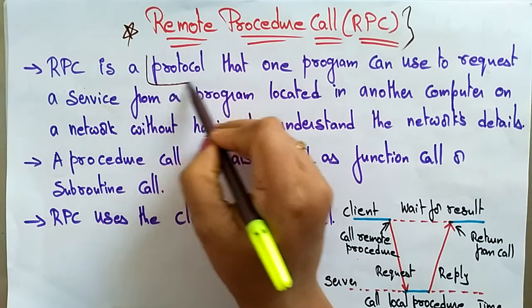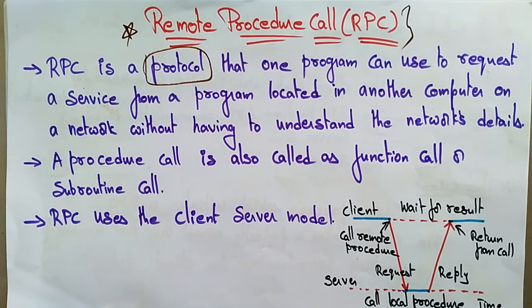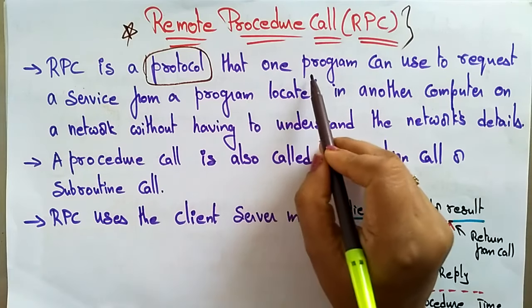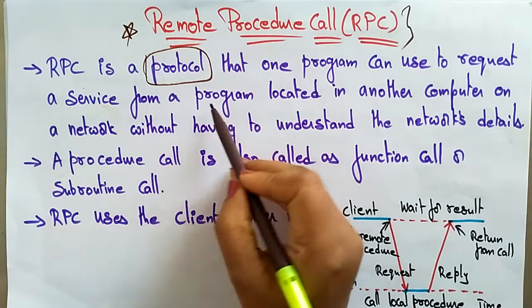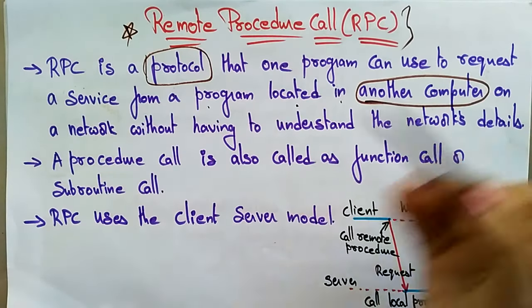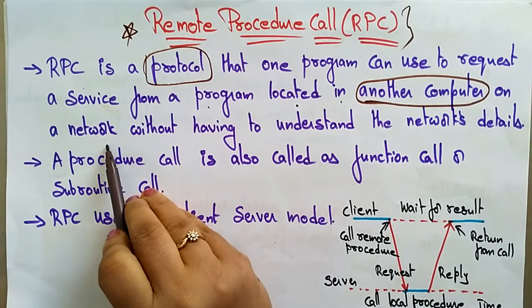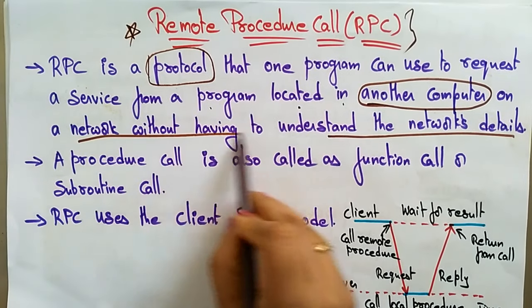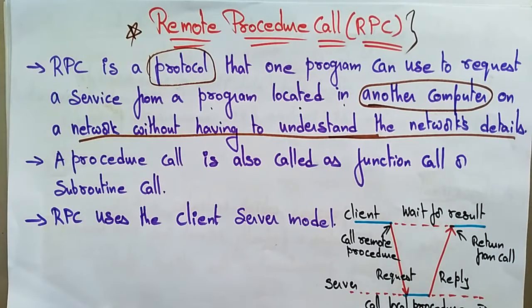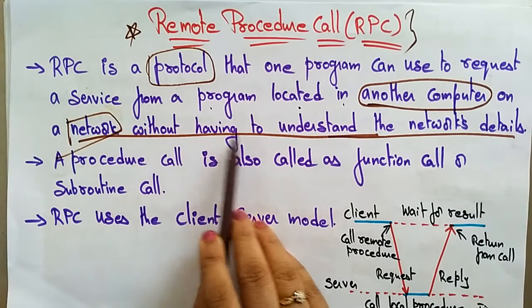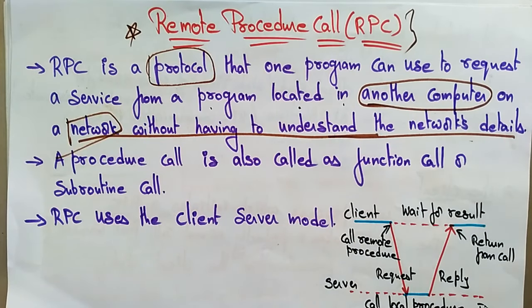RPC is a protocol — it has a set of rules to call a procedure. RPC is a protocol that one program can use to request a service from a program located in another computer on a network, without having to understand the network details. You don't know what type of network is being used or how much bandwidth it has, but you are simply calling the program present on another computer.